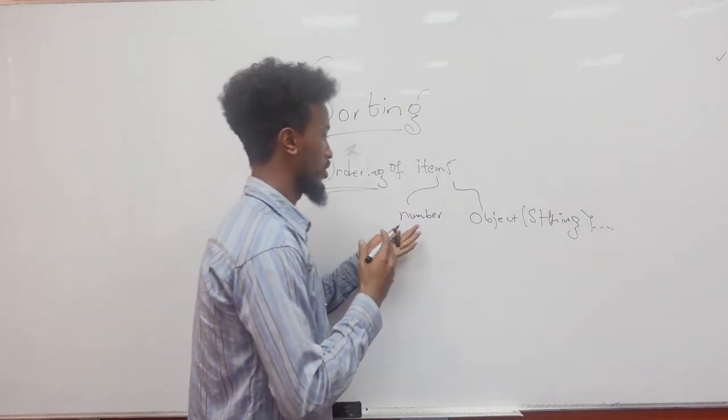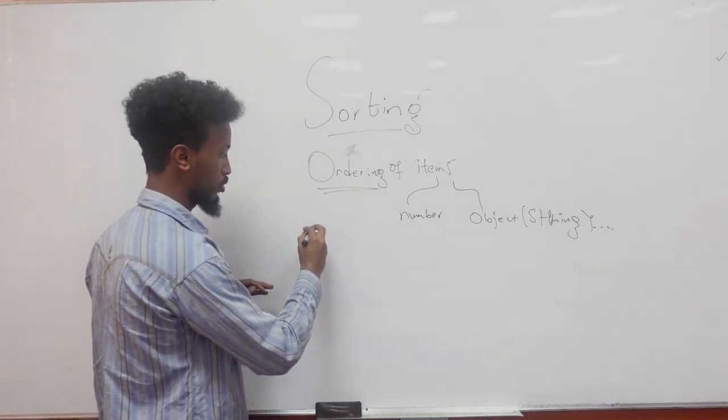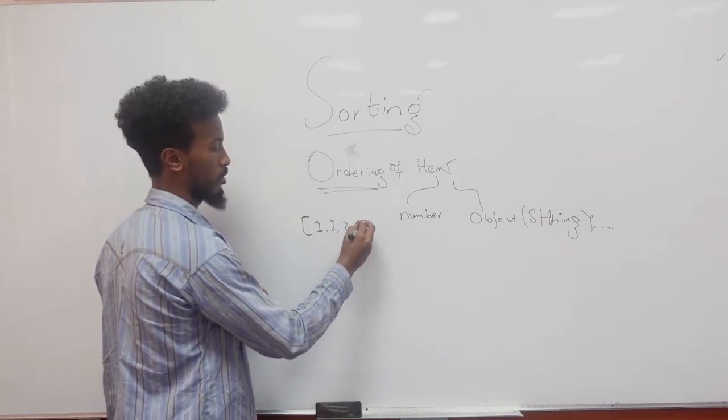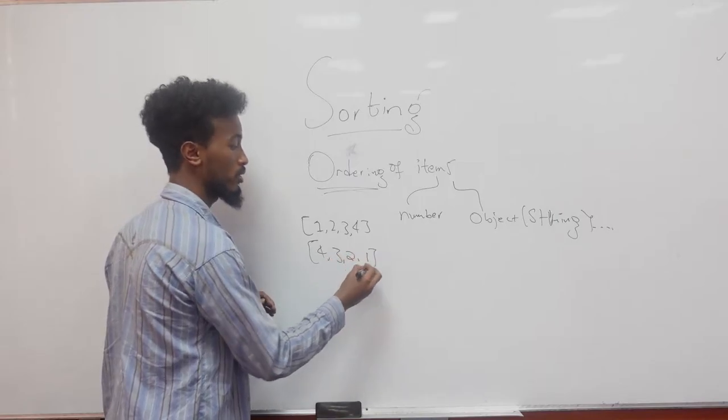Ordering of those objects, those numbers, in a certain way. For example, for numbers we could have ascending order: one, two, three, four. And we could also have four, three, two, one, descending order.